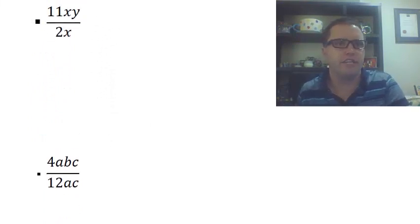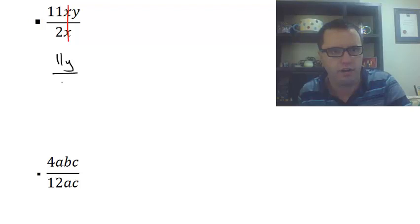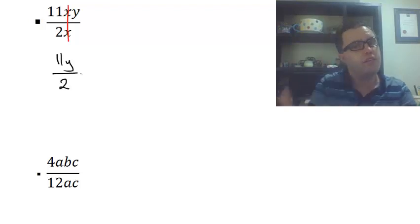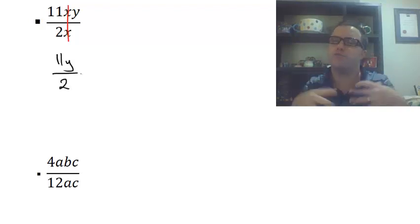Another fraction here: 11xy over 2x. Because I've got an x on the top and an x on the bottom, I can cancel those out, and I'm left with 11y/2. Now, when you've got these algebraic fractions, you're still going to ask, what about the numbers? Can I cancel the numbers out? Well, 11 and 2, both prime, so they don't have any common factors. So we're going to leave it as 11y/2.